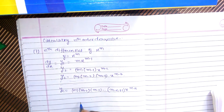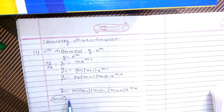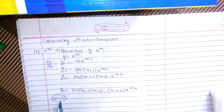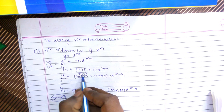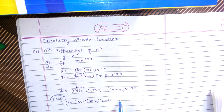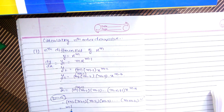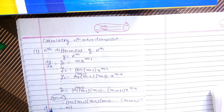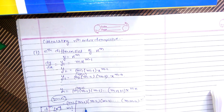Now if m is equal to n, putting n in place of m, we obtain: m times (m−1) times (m−2) times (m−3) ... times (m−m+1), times x raised to power 0. That gives us m factorial. So the nth derivative of x raised to power m, taken m times, equals m factorial.